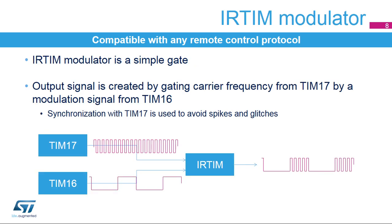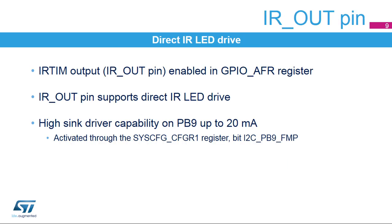The infrared timer modulator is a simple gate, gating the carrier frequency from timer 17 by a modulation waveform from timer 16. To avoid spikes and glitches on the output waveform, the infrared timer gate is synchronized with the carrier frequency from timer 17. The infrared timer output is an alternate GPIO feature, configurable in the GPIO AFR registers. The IR output pin can directly drive the infrared LED, especially on pin PB9, where the high-sink driver capability is supported. This feature can be activated through the system configuration register.